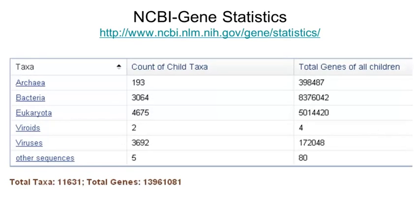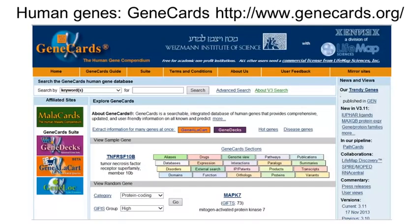As of the end of 2013, the NCBI Gene resource provides annotations for about 14 million genes in 11,000 species. If you are studying human genes, there is another great resource with even more annotations than NCBI Gene, and that is GeneCards. GeneCards is a curated secondary database of extensive experimental and predicted data about each human gene, and it is an excellent starting point for learning about a human gene. By the way, GeneCards is not part of NCBI.